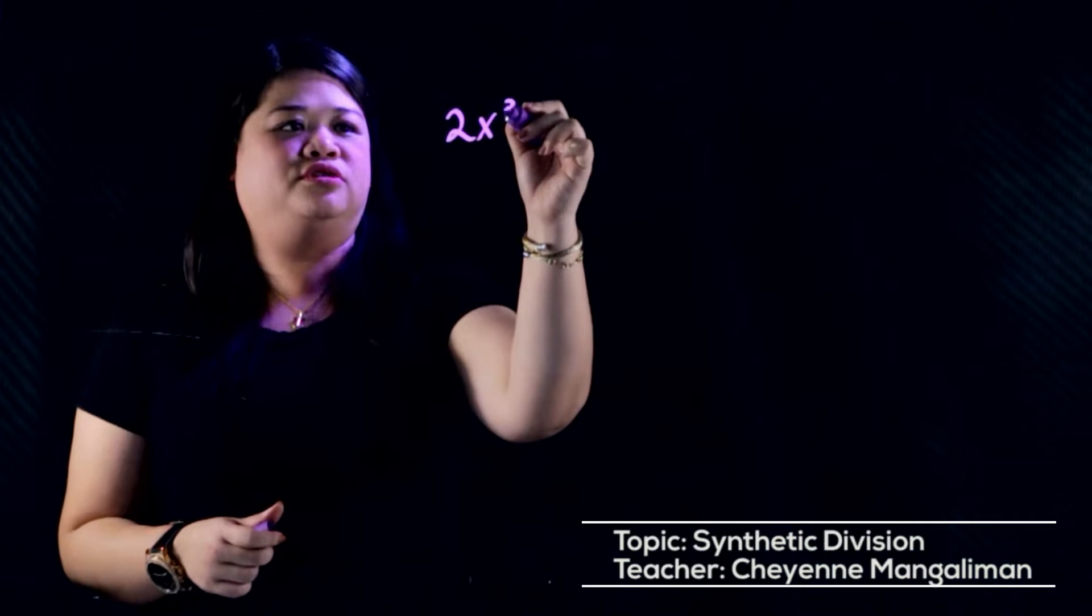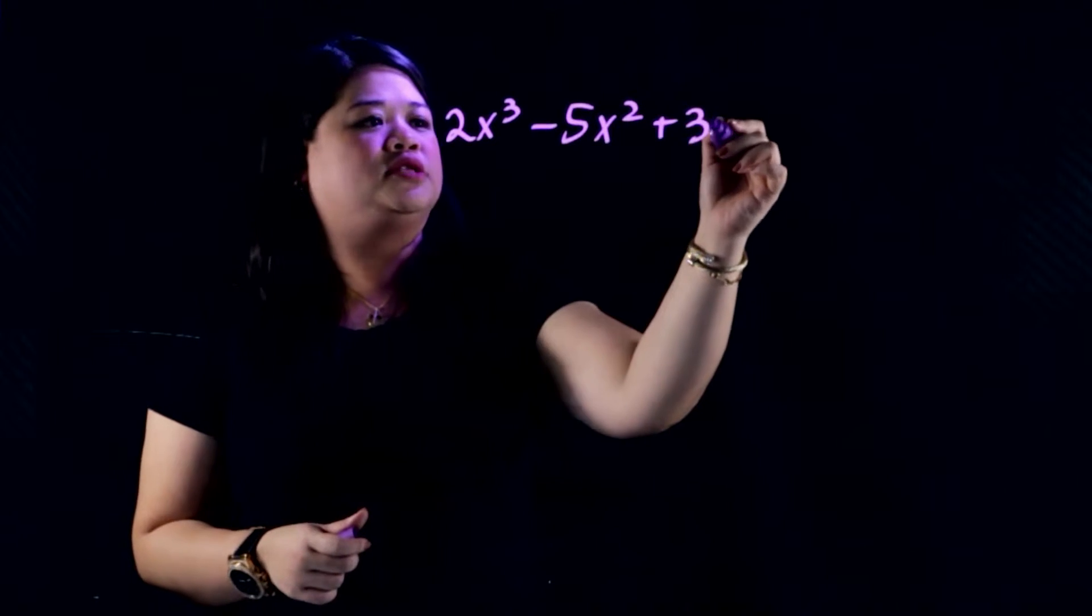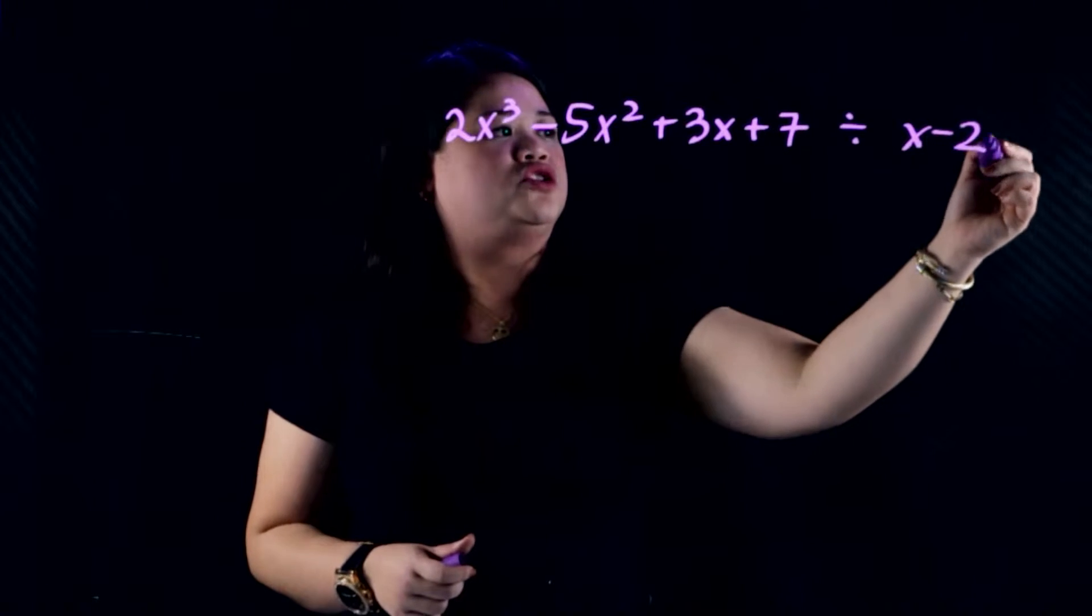Let's have another example for synthetic division. Let's have 2x cubed minus 5x squared plus 3x plus 7 divided by x minus 2.